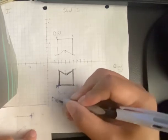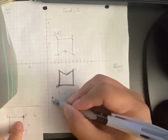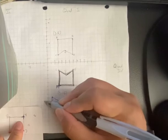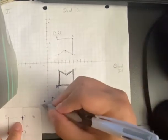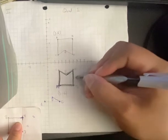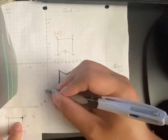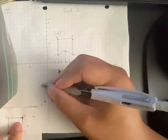I know my E goes down one and over two. One, two. Here's my E. I'm gonna go up one, two, three, four to get my B. One, two, three, four. This is my B.